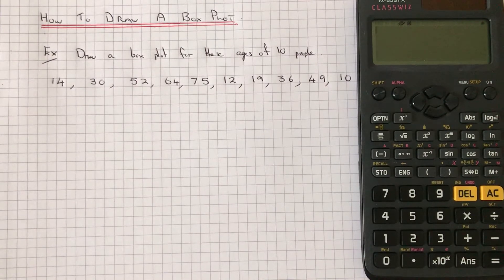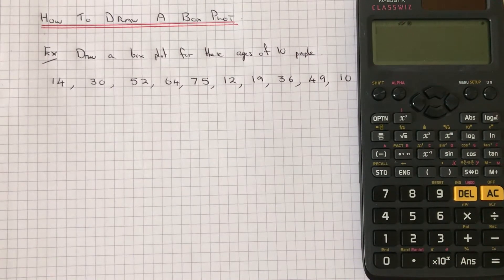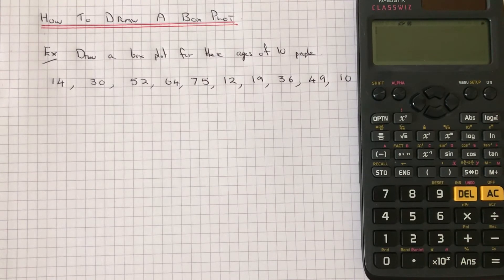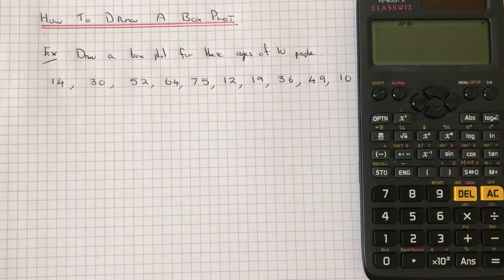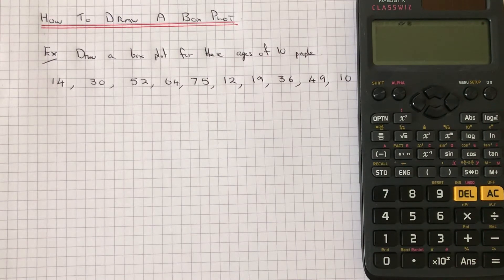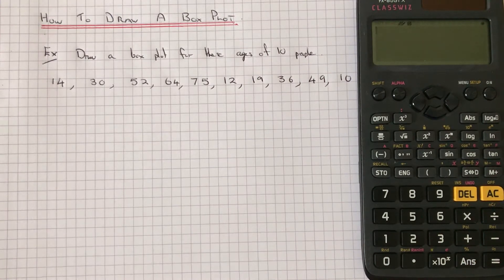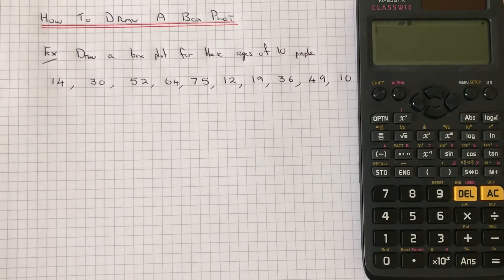So first of all then, if we're going to draw a box plot, we need five key values. We need the lowest number, we need the lower quartile, we need the median, the upper quartile and the highest number. So we're going to use our Casio ClassWiz calculator to get these values from our data.